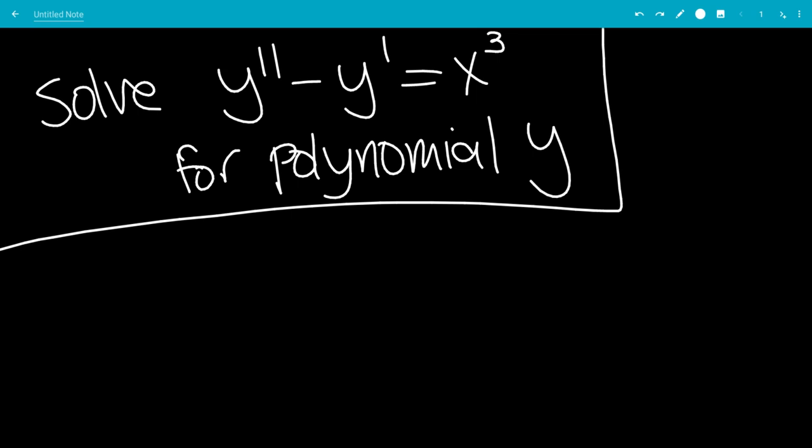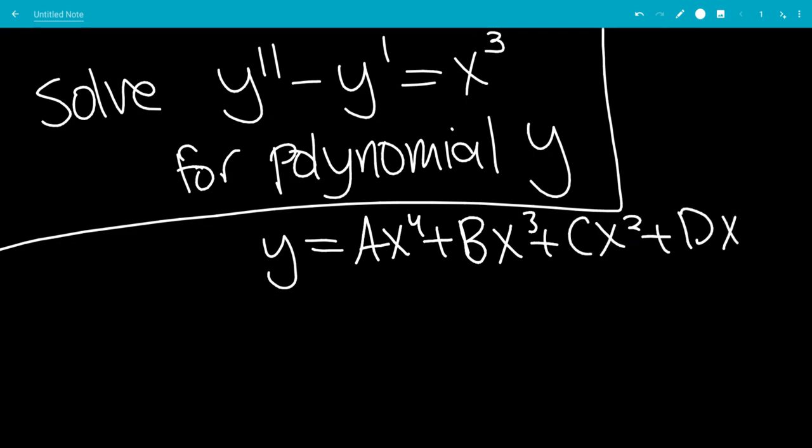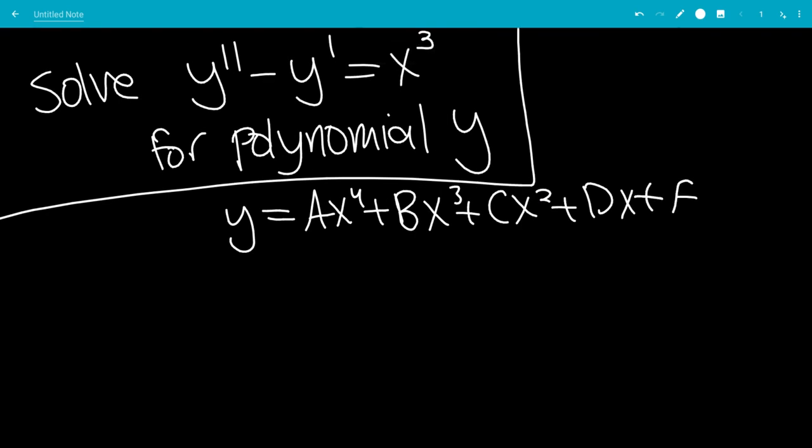It would be nice if we could substitute y equals ax cubed plus bx squared plus cx plus d, but y doesn't appear in the original equation, so the smallest power you have is x squared. So now we need to substitute y equals ax to the 4th plus bx cubed plus cx squared plus dx, and then finally plus e.